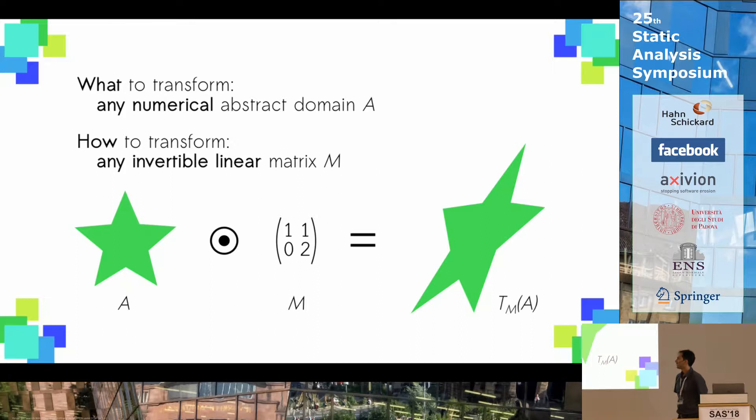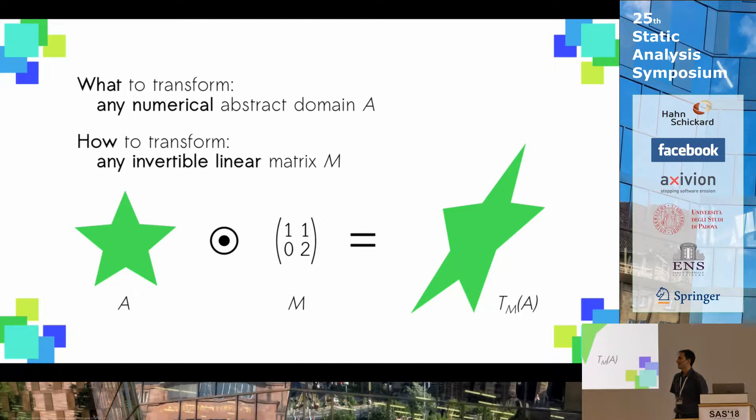This can be generalized — it's not just for intervals, and it can apply to any numerical abstract domain, for instance this star-like domain. The transformation we can apply is not just a rotation, but any invertible linear transformation. For instance, if you take this star domain, which can express star-like constraints, and apply this matrix, which is called the shearing, you get an abstract domain that can express abstraction in this form.